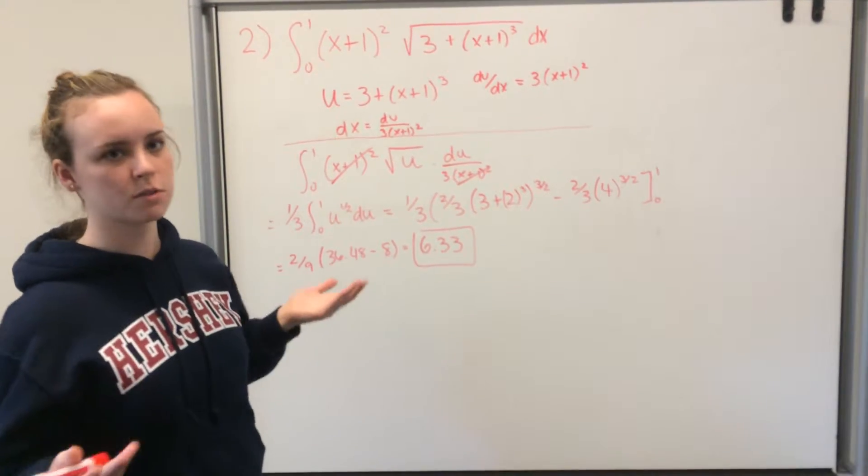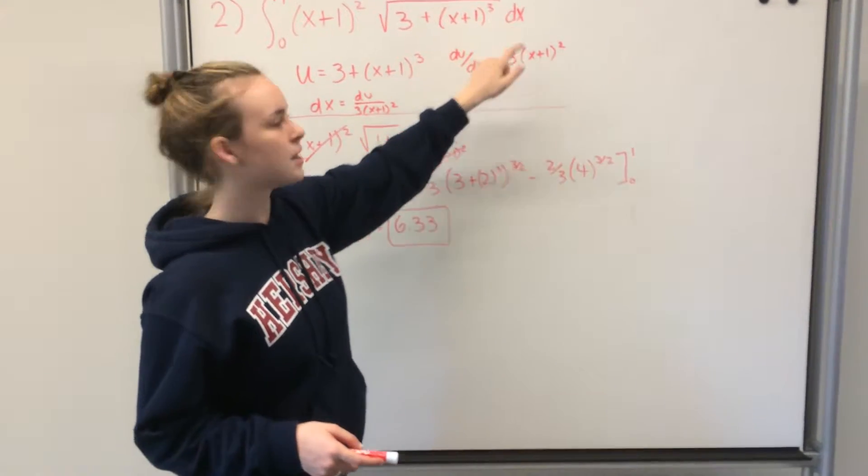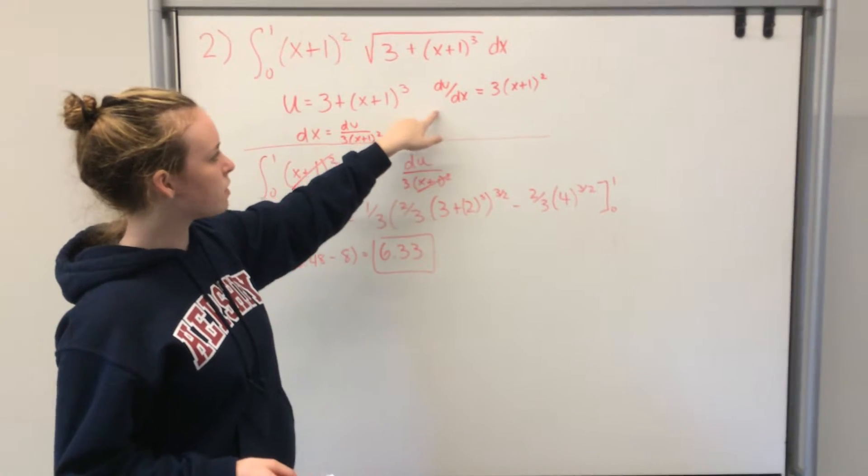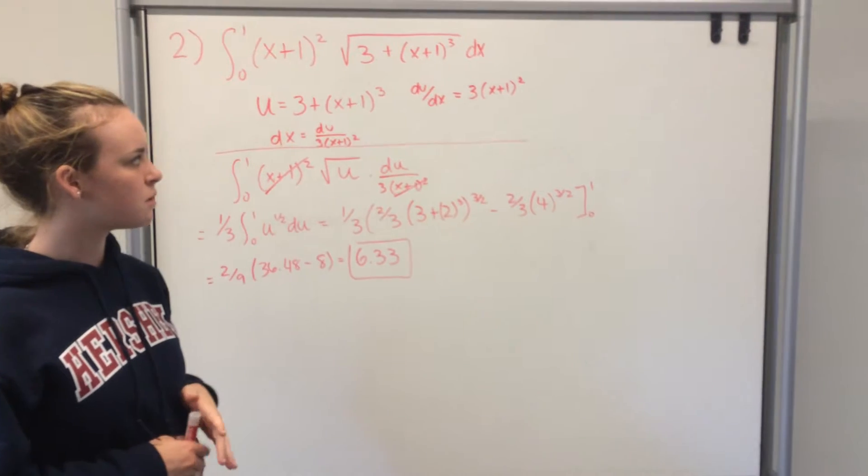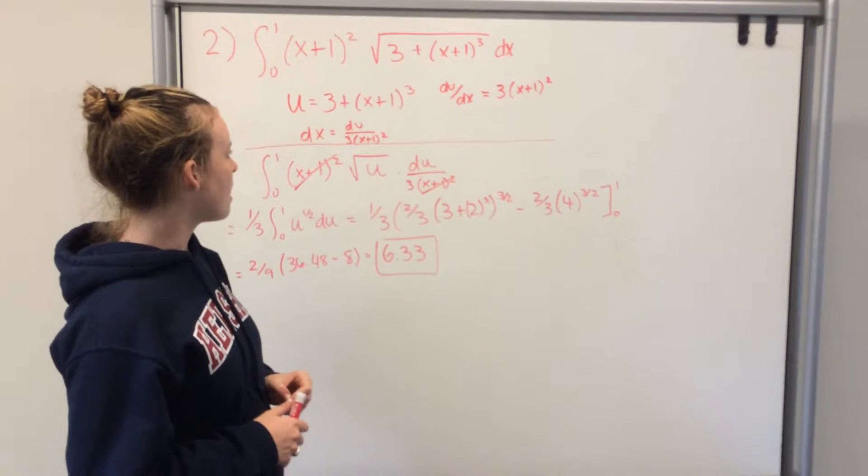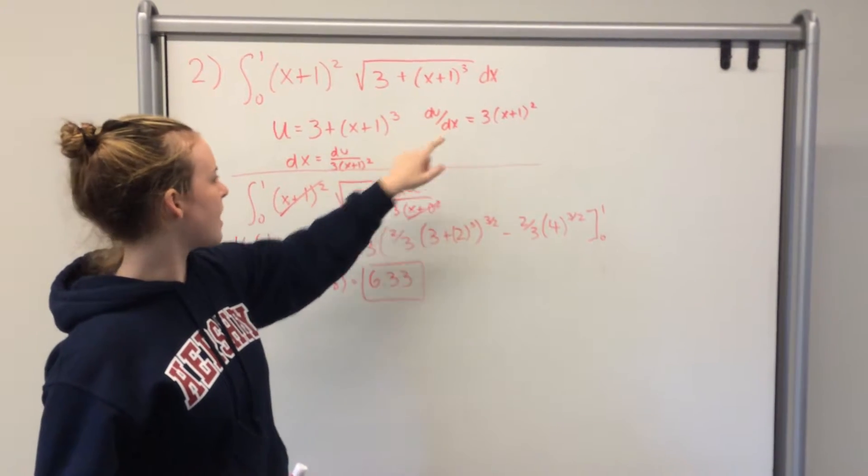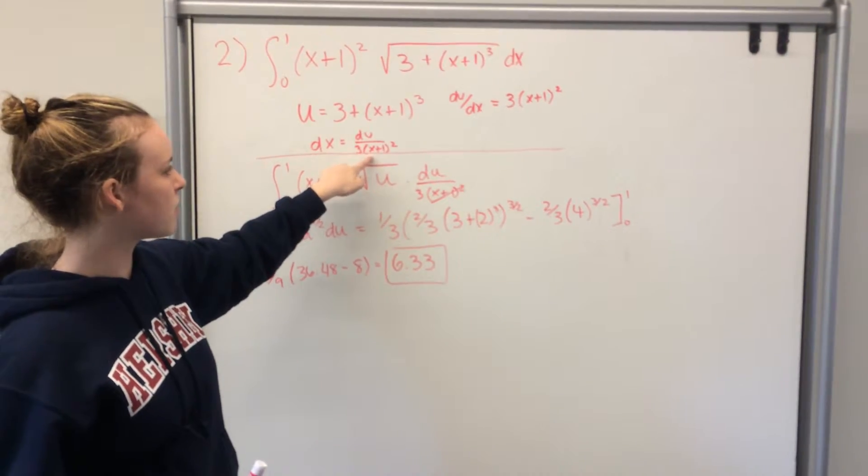What you want to do with your substitution, basically, is to substitute for the dx to cancel this first term. So you take the derivative, and you get du over dx equals 3 times x plus 1 squared. Then, you isolate the dx, and say dx equals du over 3 times x plus 1 squared.